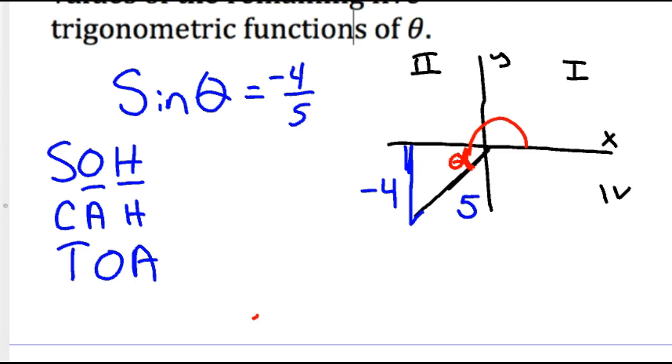Because here's your opposite, here's your hypotenuse. And it's negative four because the triangle, if you think about the XY plane, it's going left so many and down four. And so that's why it's negative.